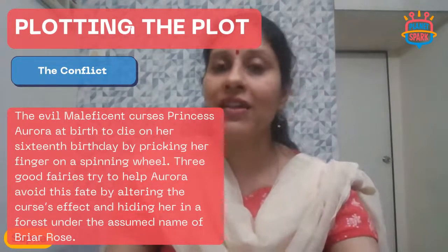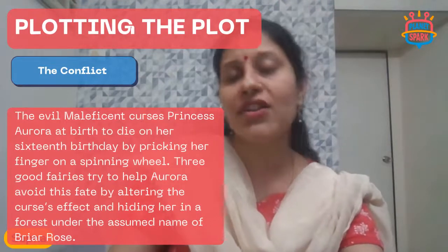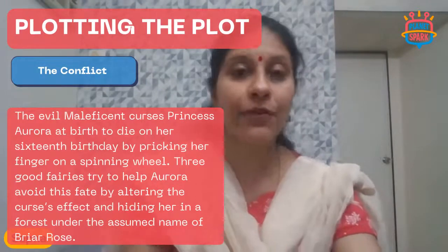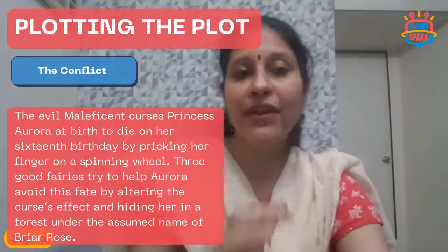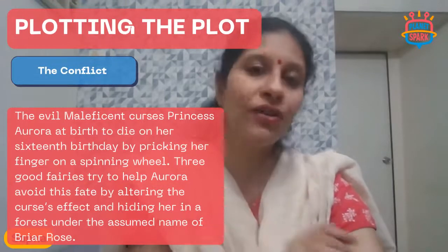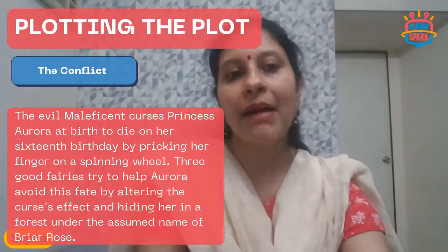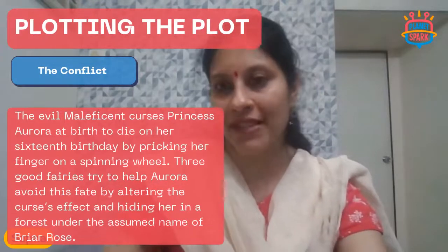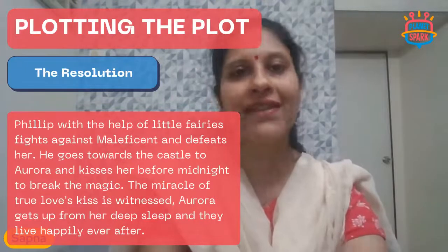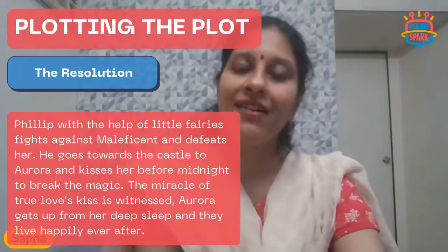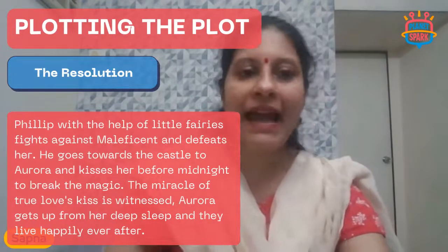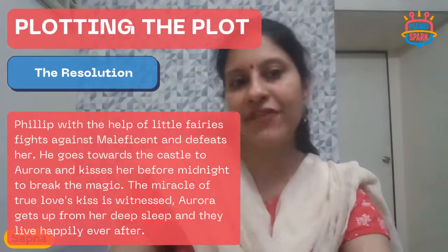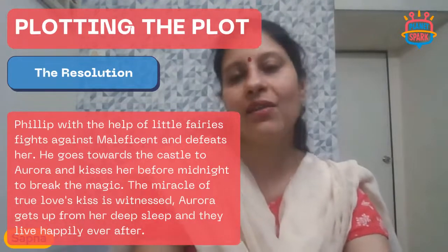The first element: the conflict. The evil witch curses Princess Aurora at birth to die on her 16th birthday by pricking her finger on a spinning wheel. Three good fairies try to help Aurora avoid this fate by altering the curse's effect and hiding her in a forest under the assumed name of Briar Rose. The antagonist, the evil witch Maleficent, is the one who curses Aurora into a deep spell.